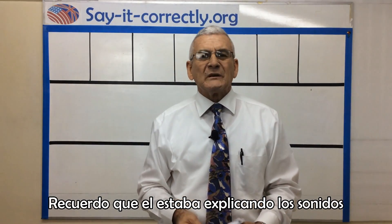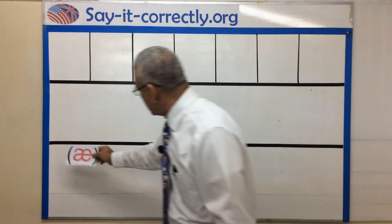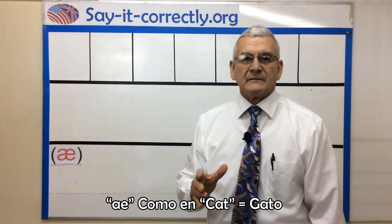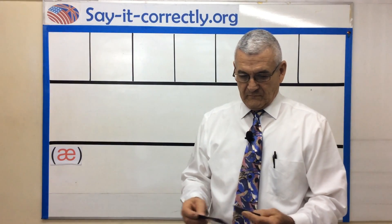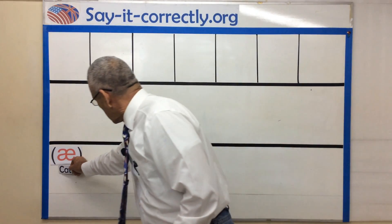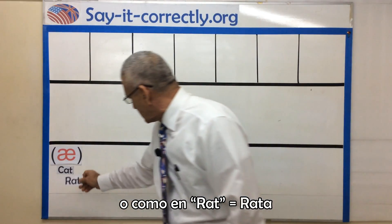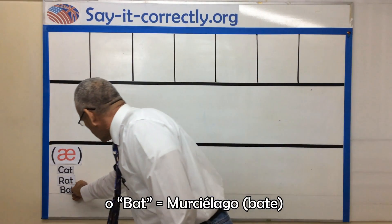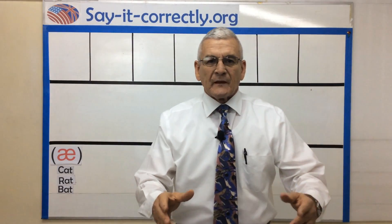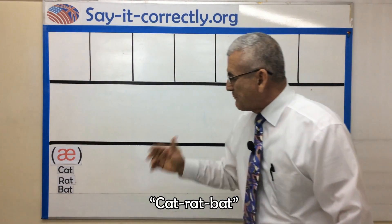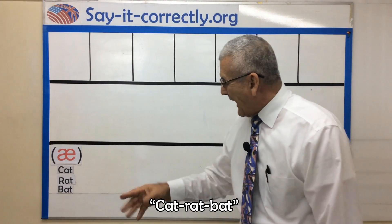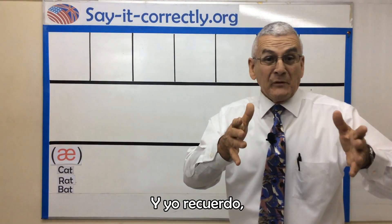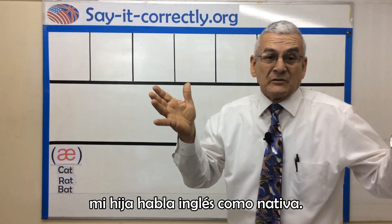He was explaining the sound like in cat, or like in rat or bat. And he used to say 'repeat after me — cat, rat, bat. Cat, rat, bat.' See, it was a pattern. And I remember my daughter speaks English like a native.